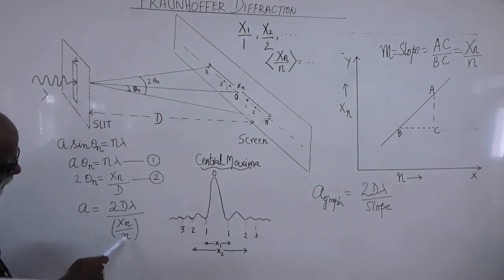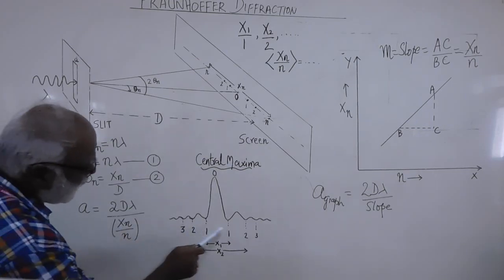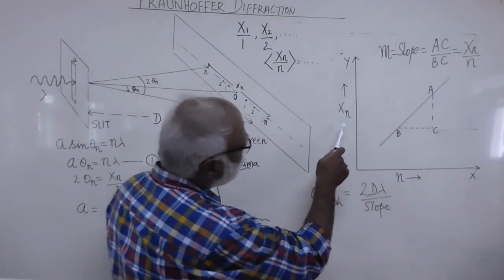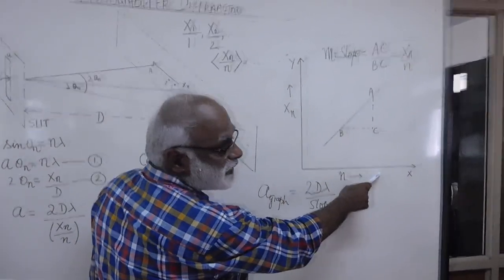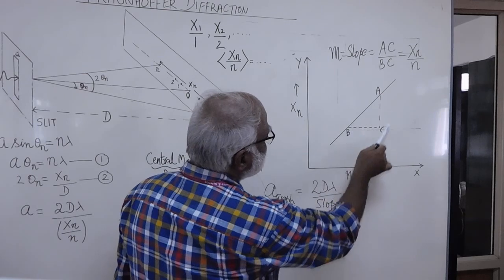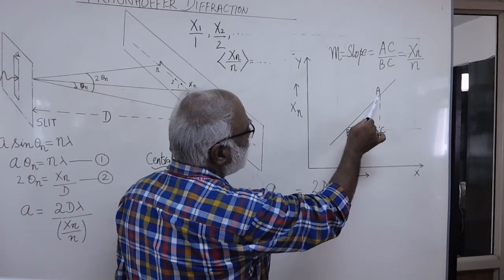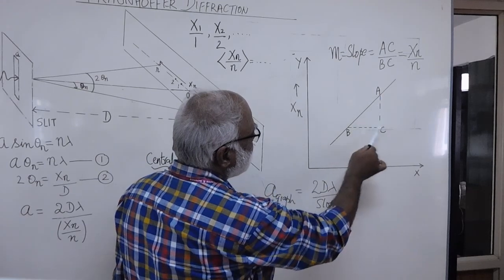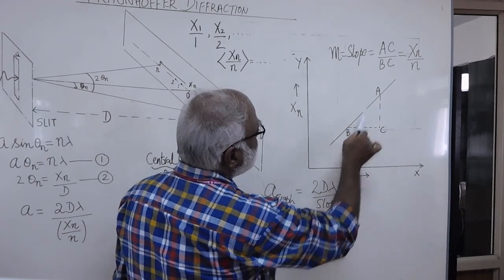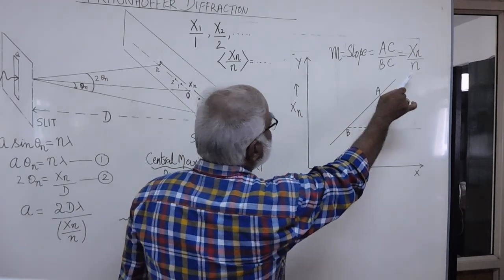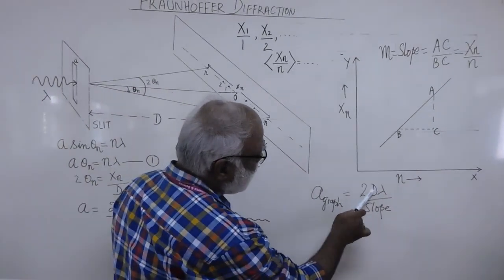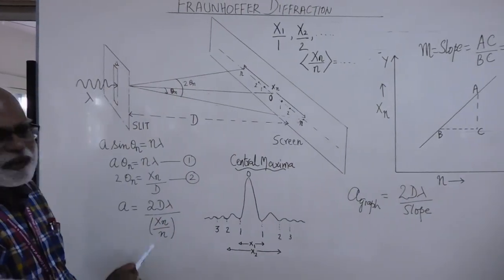The alternate way of calculating xn/n is by graphical method. From the data of various xn values — x1, x2, x3 etc. — we plot a graph of xn on the y-axis versus n on the x-axis. This graph will be a straight line. We draw the best fit line and determine the slope by constructing a right-angle triangle and calculating the rise over run. The slope represents xn/n, so we can calculate a by the graphical method as a = 2dλ / slope.